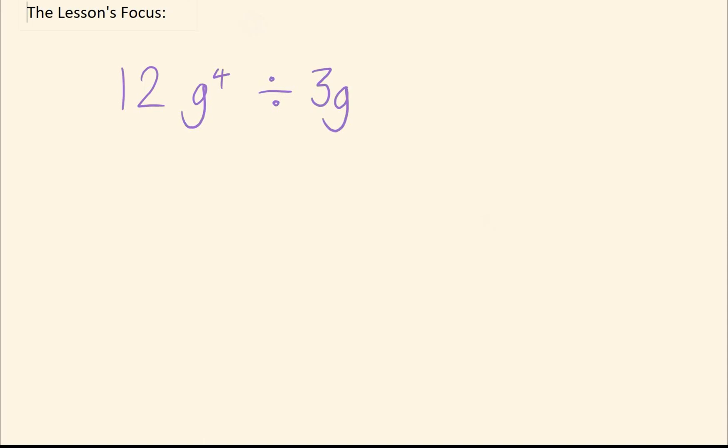Let's see the idea again. So again, similar to what we did with multiplying, we're basically separating out our numbers from our powers. So 12 divided by 3. That's going to give us 4.